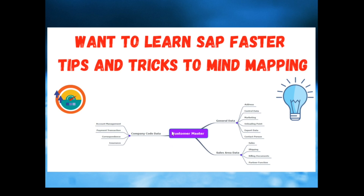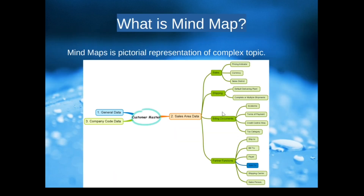Here is a representation of mind mapping. We can see a picture where customer masters have some sub-branches, and sub-branches have additional branches. Customer master is a central idea represented in the mind map, where you have sub-ideas with branches attached. For example, 'General' is one branch, then sales area data and company code data. Each branch might have additional complex branches.